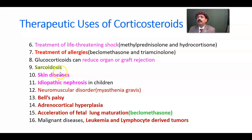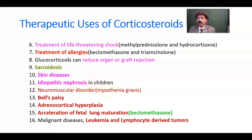Skin diseases like eczema and psoriasis are managed by glucocorticoids. Idiopathic nephrosis in children is also treated by glucocorticoids. Neuromuscular disorders like myasthenia gravis — where antibodies form against post-synaptic receptors — are managed by glucocorticoids. Bell's palsy, which is lower motor neuron paralysis of the facial nerve, is also managed by glucocorticoids.